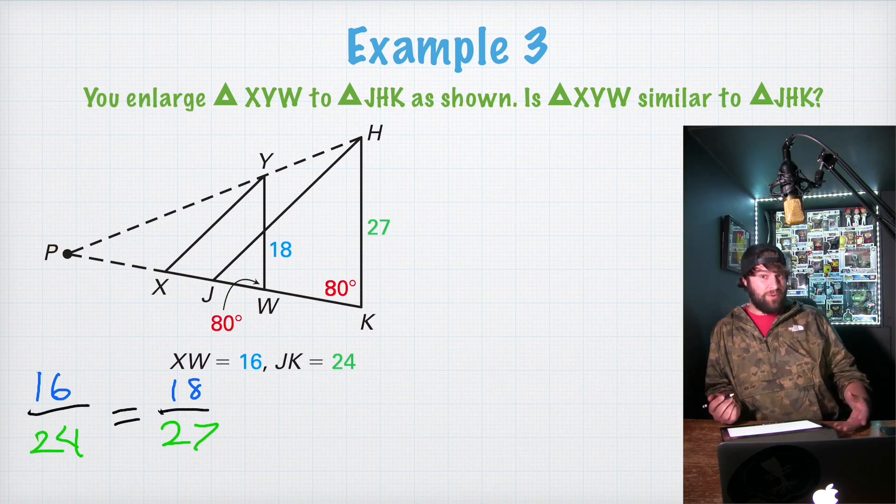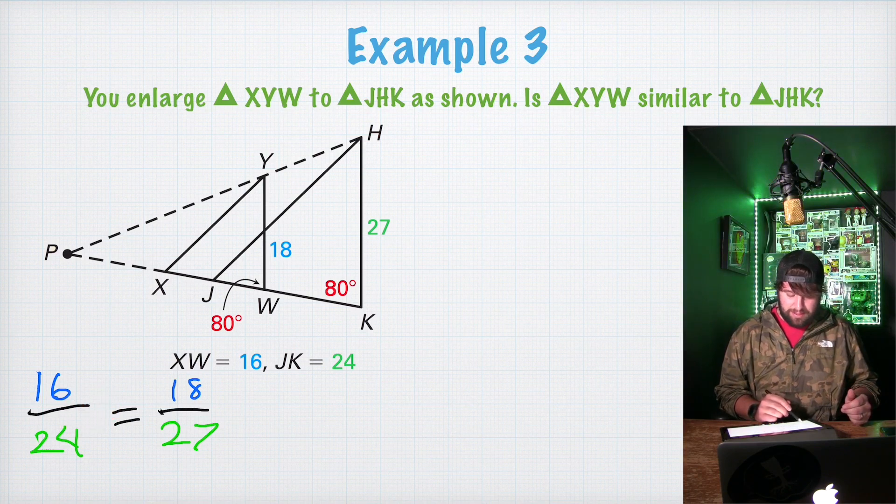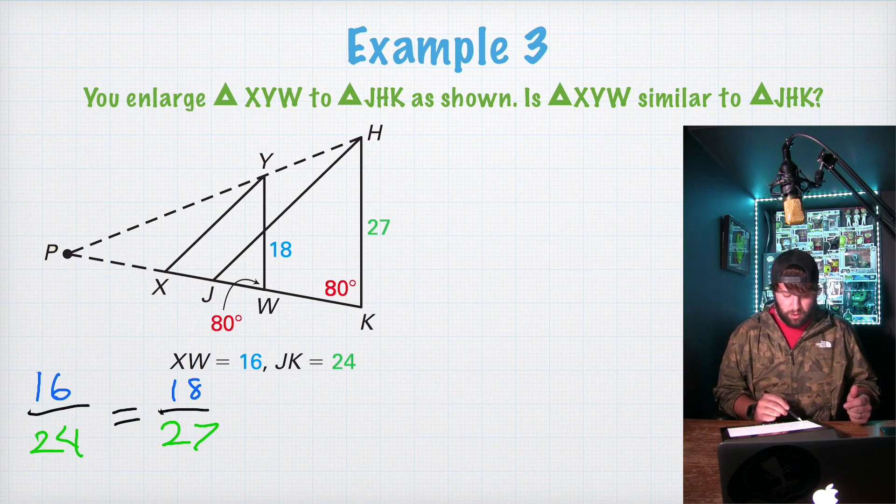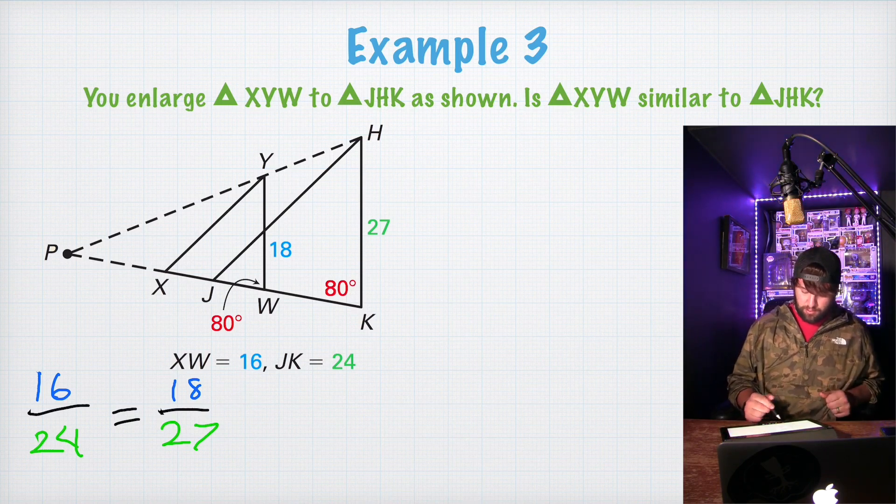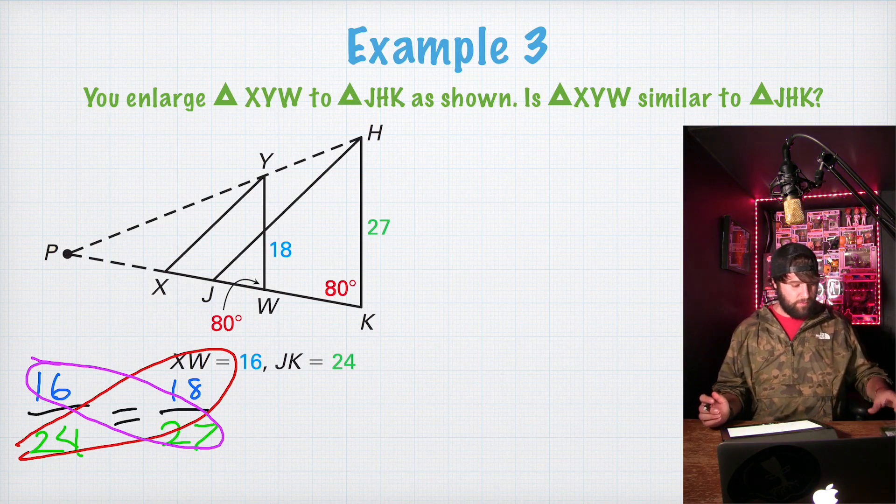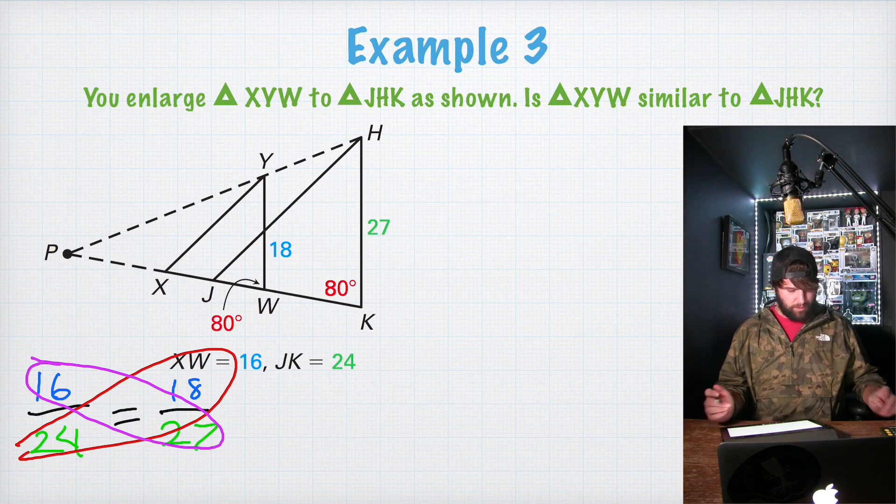So we're asking is that proportional to 18 over 27? There are actually two ways we could go about doing this. I never really say that. But we can simplify these. So like this is divisible by 4 to be 4 over 6. I guess it's also divisible by 8 to be 2 over 3. This is divisible by 9 to give us 2 over 3. That's one way you could do it. But I'm going to go ahead and show you this way. If we cross multiply and we come out to get the same number, those two sides will be congruent.